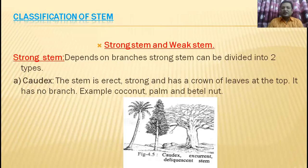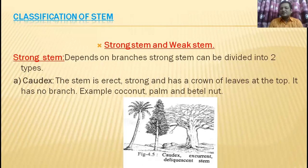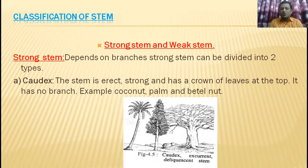Now, classification of stems. Stems are generally divided into two types: strong stem and weak stem. Regarding strong stems, depending on branches, strong stems can be divided into two types. One is the excurrent stem — the stem is straight and strong and has a crown of leaves at the top with no branches. Examples are coconut palm and betel nut. As you can see, the coconut tree has no branches, only leaves at the upper portion.